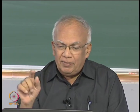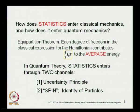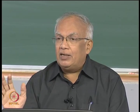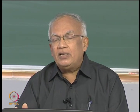In quantum mechanics, statistics enters because of the uncertainty principle. Laws of nature are intrinsically statistical — there is a probabilistic interpretation that quantum mechanics demands even when dealing with a single particle or even vacuum. So it has nothing to do with the number of particles; having fewer particles, even a single particle, does not eliminate statistics.